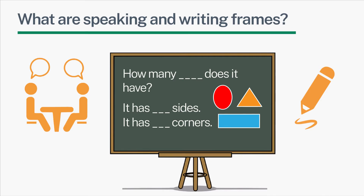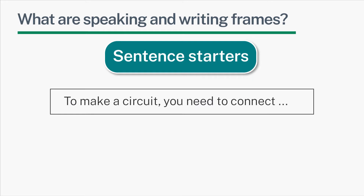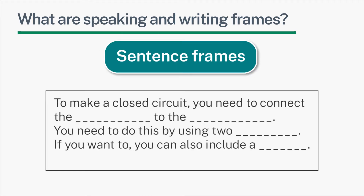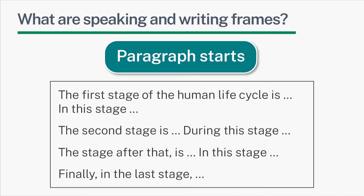There are various different types. Sentence starters, where learners are given the first word or first few words of a sentence. Sentence frames, where learners are provided with useful structures with gaps in for them to complete. And paragraph starts, which can provide scaffolding for pieces of extended writing by giving learners the first few words of each paragraph.